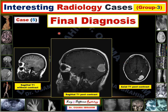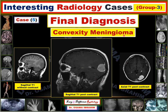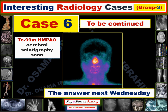The final diagnosis for Case 5 is convexity meningioma, appearing in the left occipital lobe with a dural tail at the convexity. Meningiomas occur in supratentorial locations in approximately 90% of cases, and the majority occur in the parasagittal or convexity region. This is a convexity meningioma as the final diagnosis.